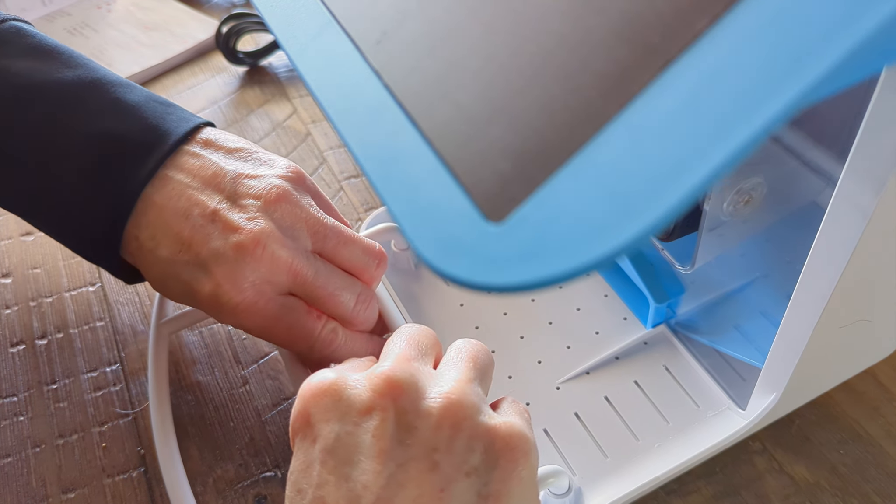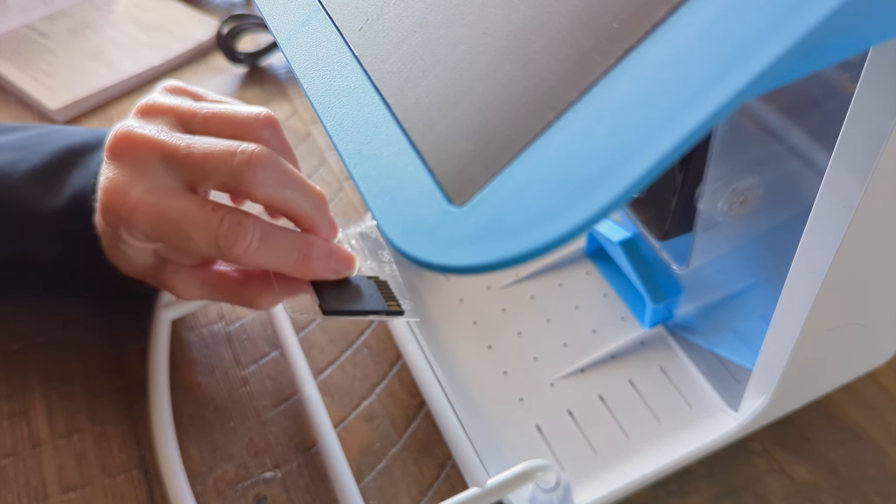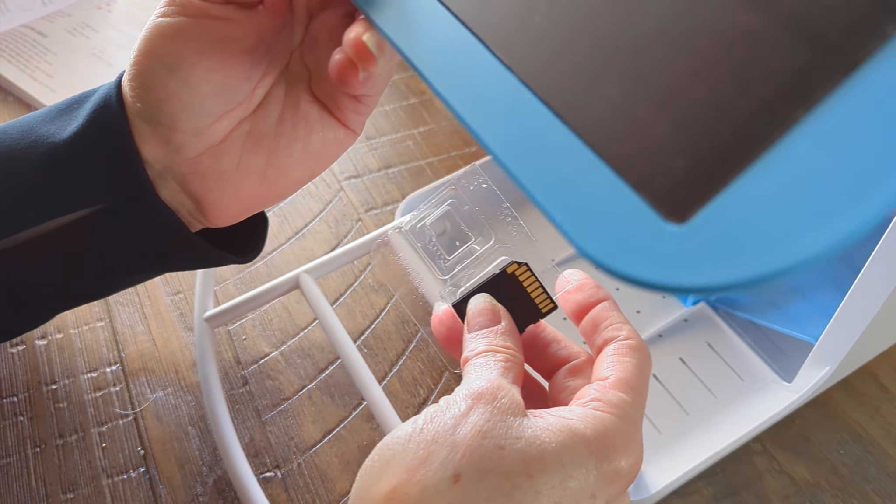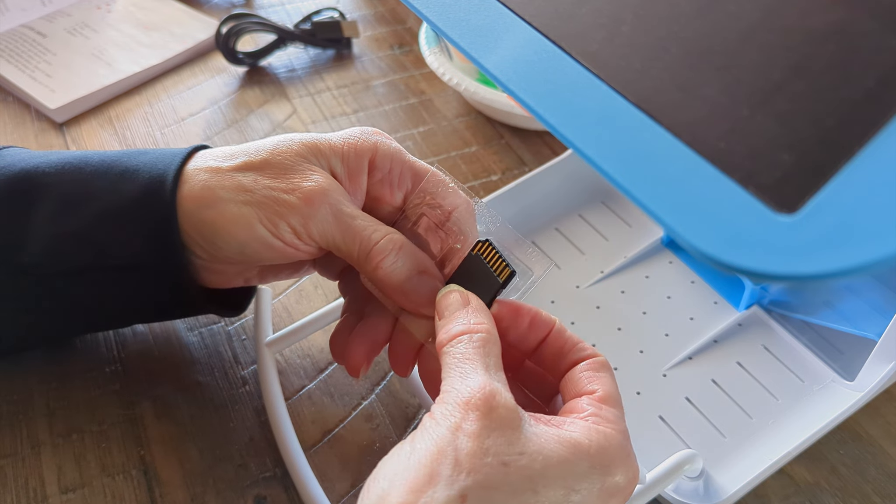Now when you get your SD chip, your microchip, it will have to be formatted. So the app will give you the option for that. So make sure that you format the chip.